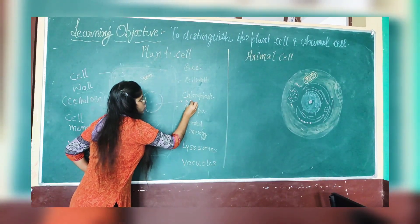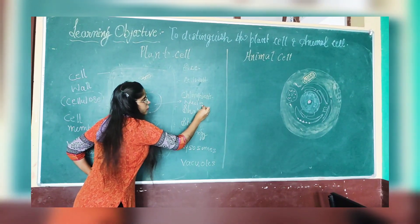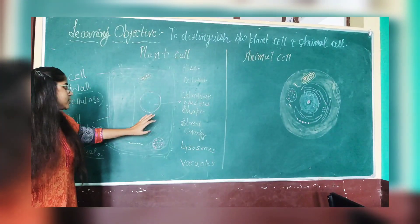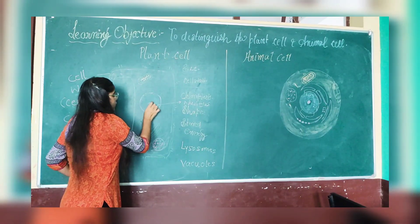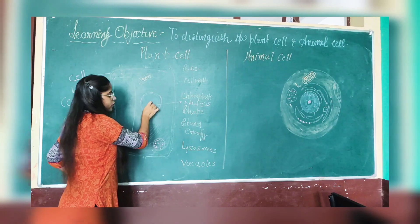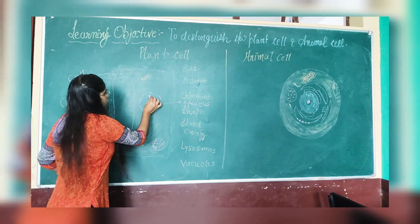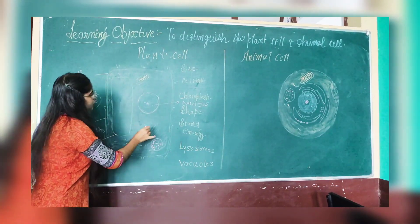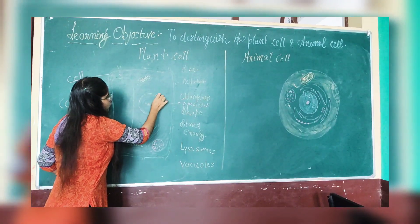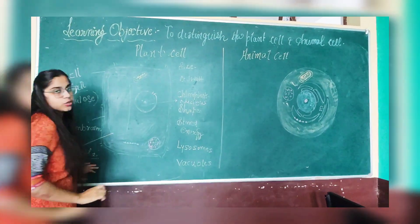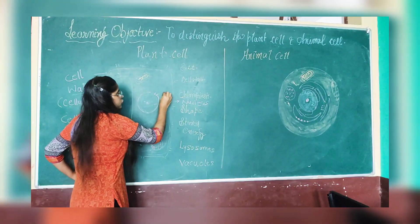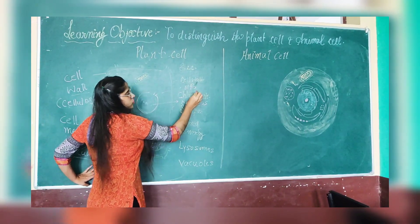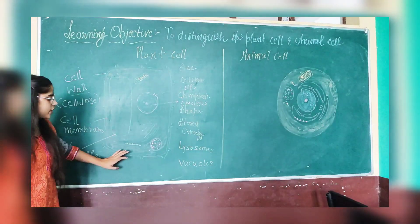Now we have the nucleus of the cell. It is controlling the entire activity inside the cell. Inside the nucleus, the nucleolus is present. Outside the nucleus, the endoplasmic reticulum is present, and the function of this endoplasmic reticulum is to form proteins inside the cell.